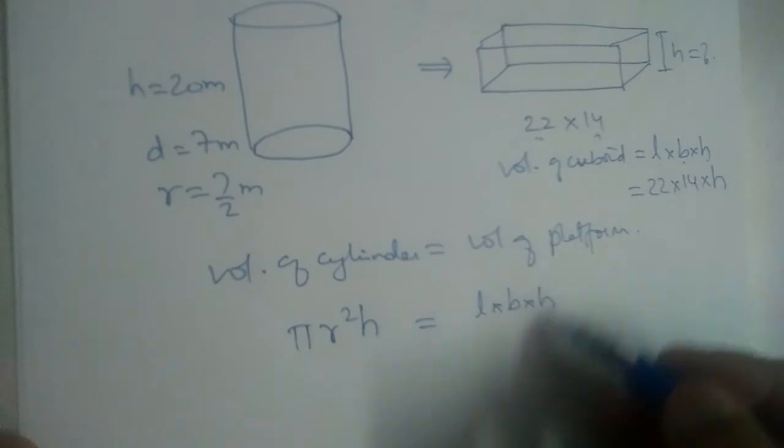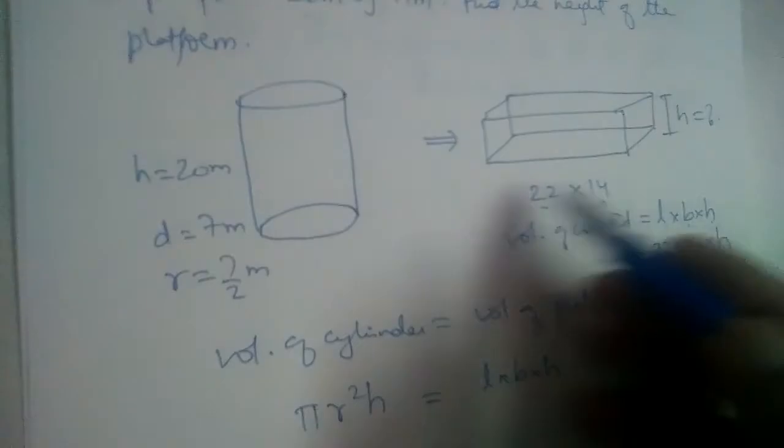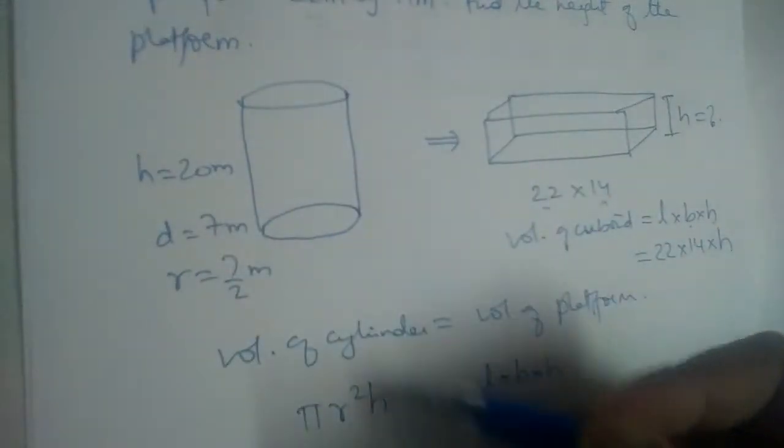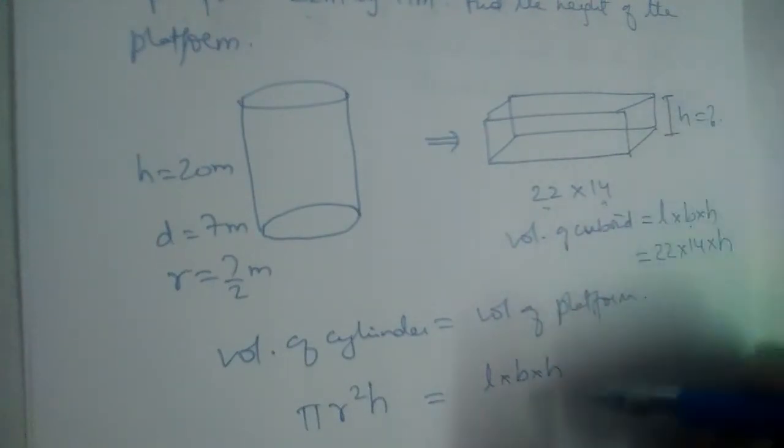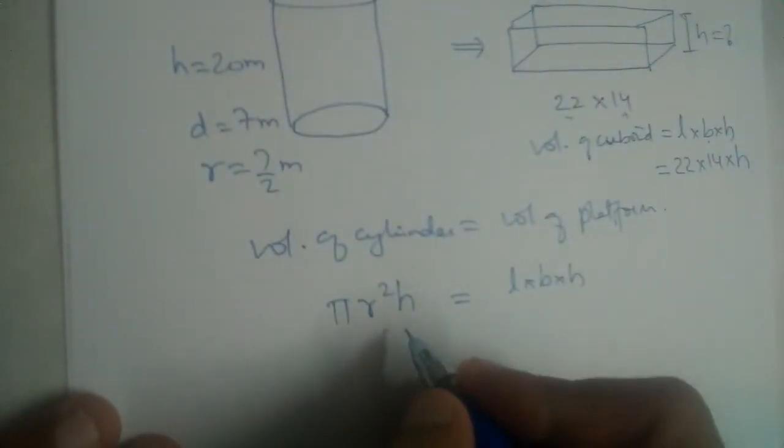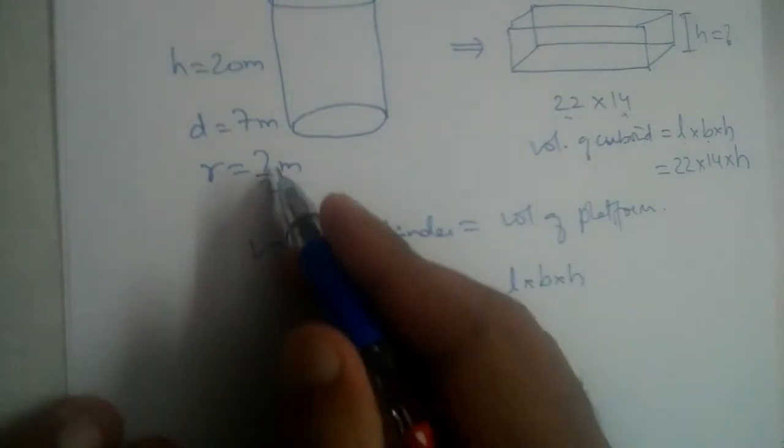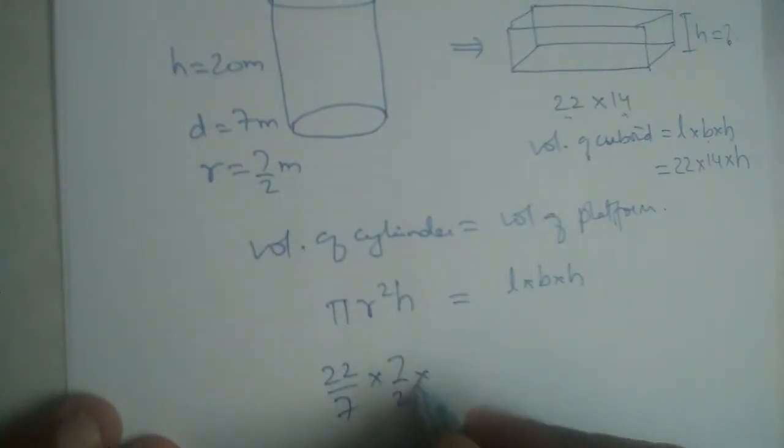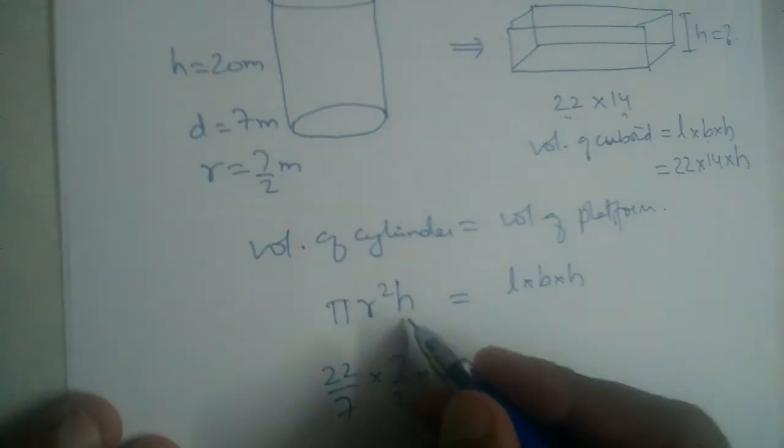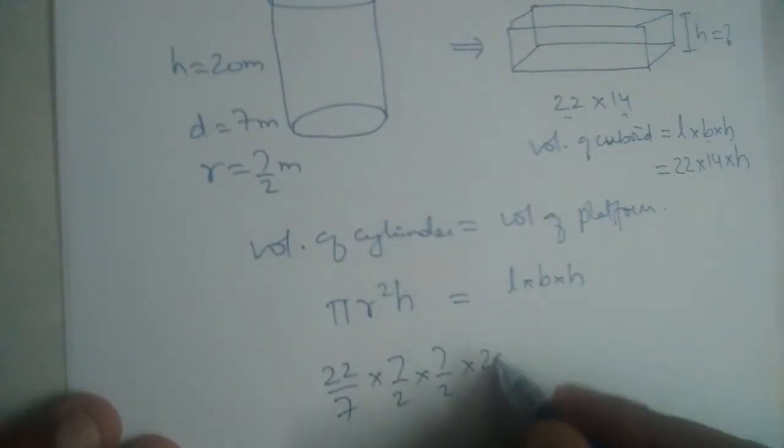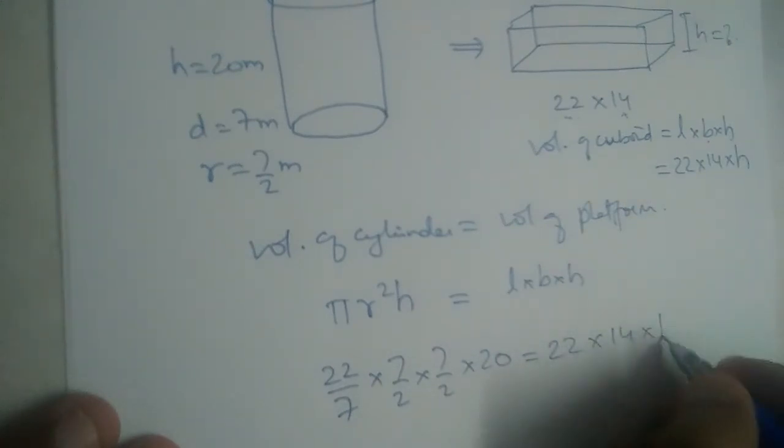H here is the height of the cylinder, h here is the height of the cuboid. Let us substitute the values: pi is 22 by 7, r is 7 by 2, so r squared is 7 by 2 times 7 by 2, into h which is 20, equals l into b into h, which is 22 into 14 into h.